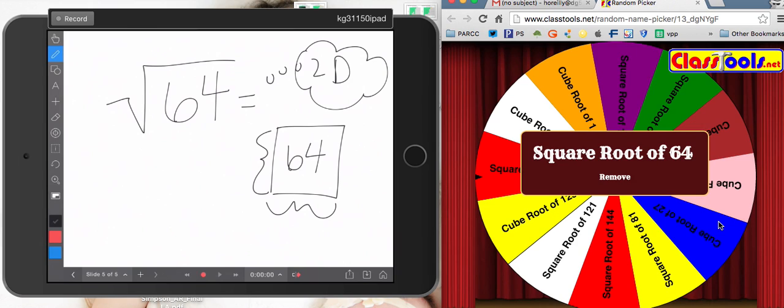So what's the number? 7 times 7 is 49. 8 times 8 is 64. Boom! So 8 times 8 is 64, so the square root of 64 equals 8.